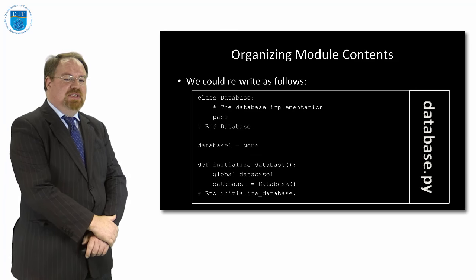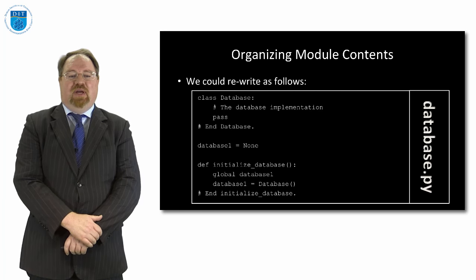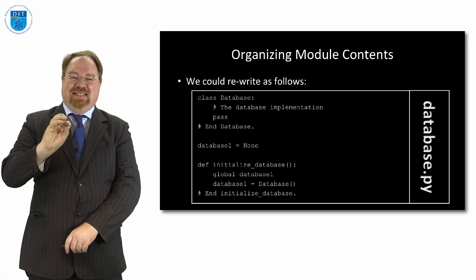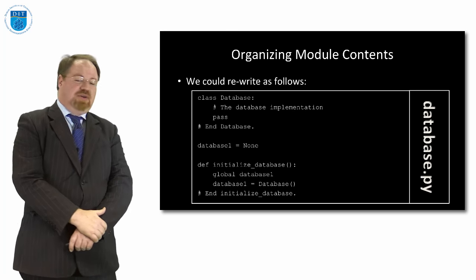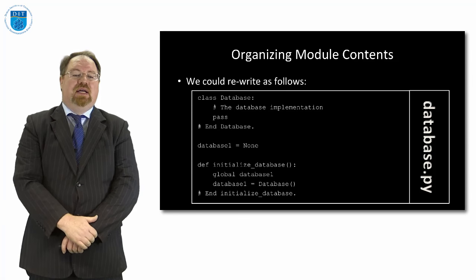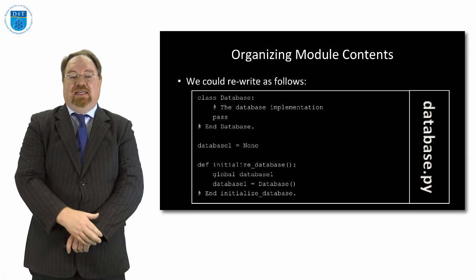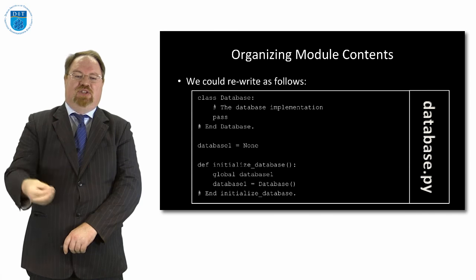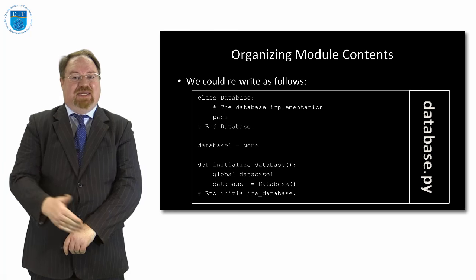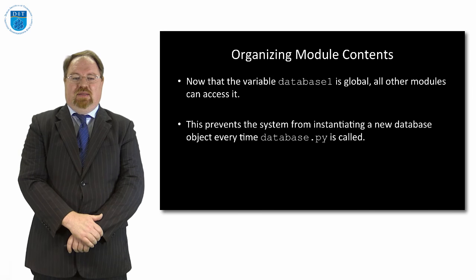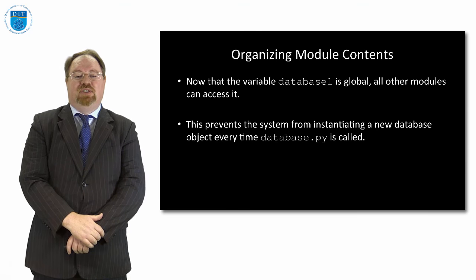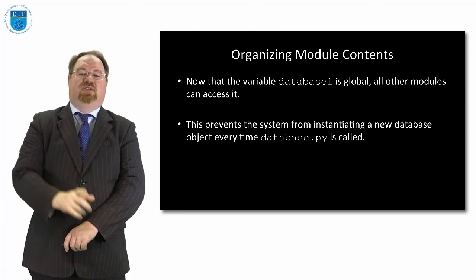Instead, we rewrite as follows: we have our database class implementation as before, but then database_one is assigned None — it's not instantiated. We add a new method called initialize_database, and that method creates database_one as an instance of database. So calling the database class won't create an instance; it's only when we call initialize_database that database_one will have a value and connect to the system. Everyone can access database_one, but it won't be created until we initialize it.